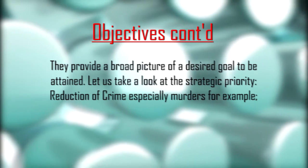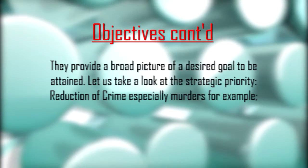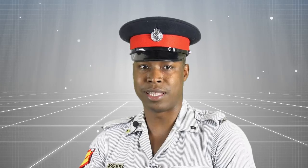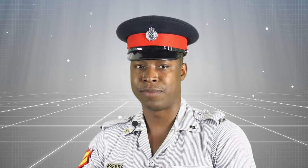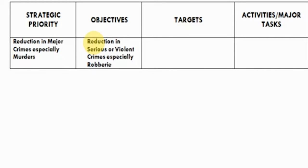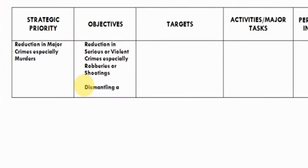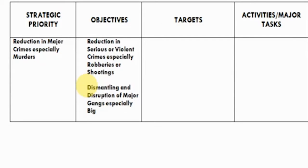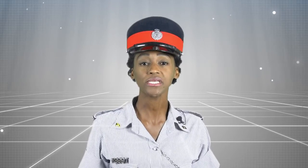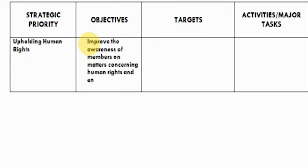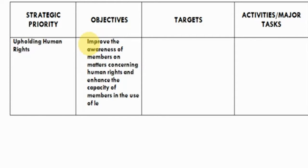Objectives are aligned to the strategic priorities of the JCF and seek to address the unique issues facing the respective areas, branches, divisions, sections, and formations. They provide a broad picture of a desired goal to be attained. For example, under the strategic priority of reduction of crime, especially murders, if your station is experiencing an increase in a particular crime, one objective could be: reduction in serious and violent crimes, especially robberies and shootings. If your division has a problem with an active criminal gang, you may set an objective: dismantling and disruption of major gangs, especially Big Yard, Hilltop, and Red Square gangs. For the strategic priority of upholding human rights, you could consider objectives to improve awareness of members on human rights matters and enhance the capacity of members in the use of less lethal force.